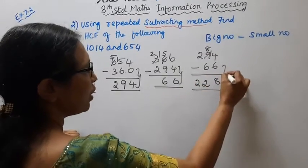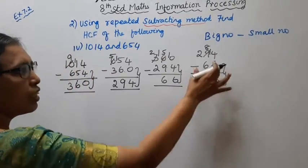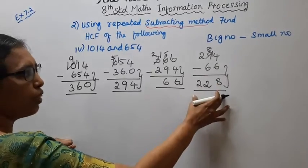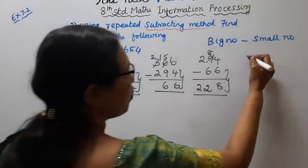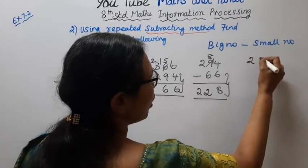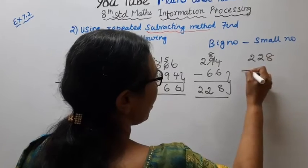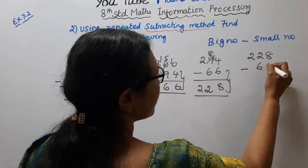Now, either end of this number. We have 66 and 228. Upon 228, the period number. 228 minus 66.